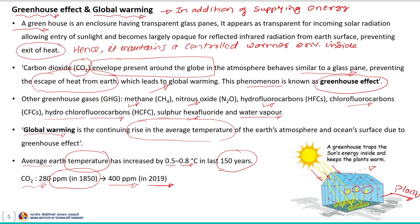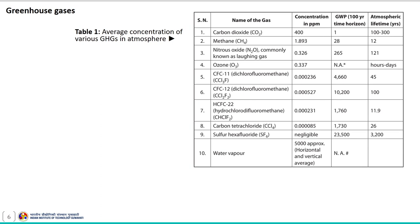Apart from carbon dioxide, the average concentration of various greenhouse gases in the atmosphere is tabulated here. It indicates the greenhouse gases and their average concentration in the atmosphere.